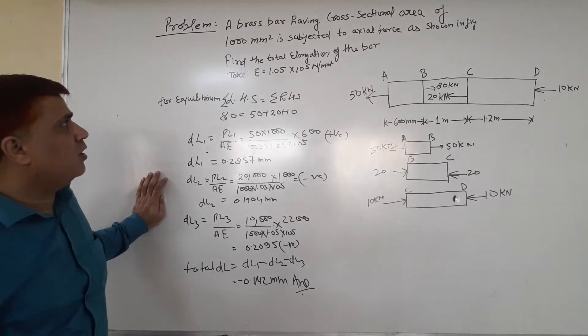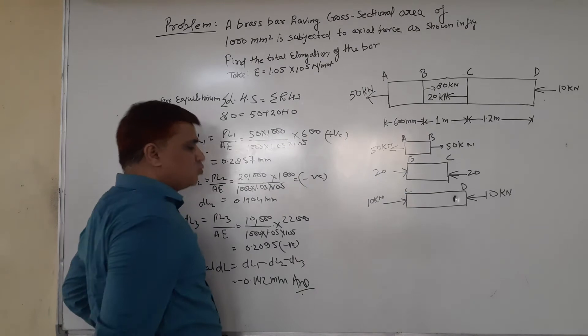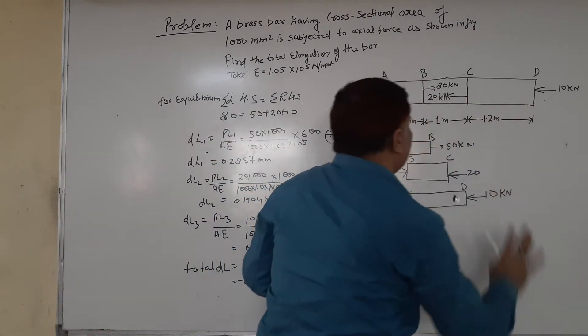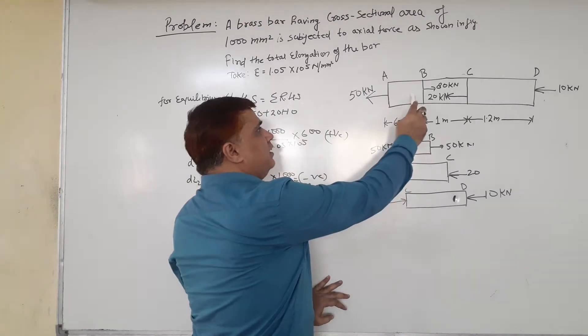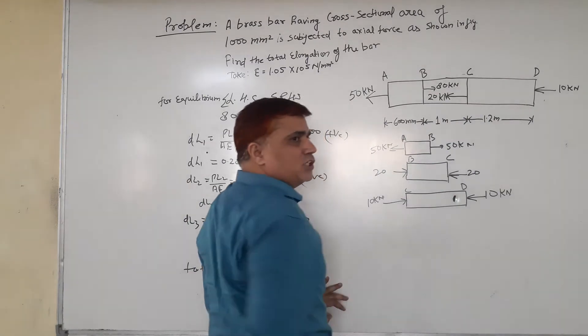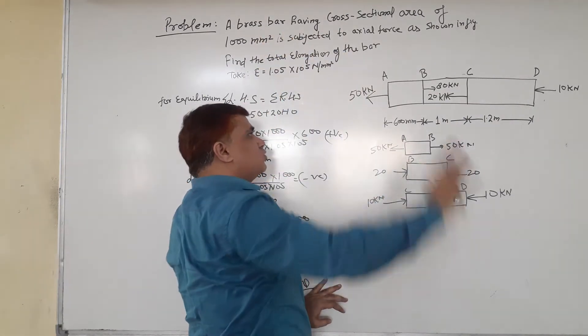The modulus of elasticity is given as 1.05 × 10⁵ N/mm². Here is a brass bar having three sections: AB, BC, and CD, which have the same cross-sectional area of 1000 mm².